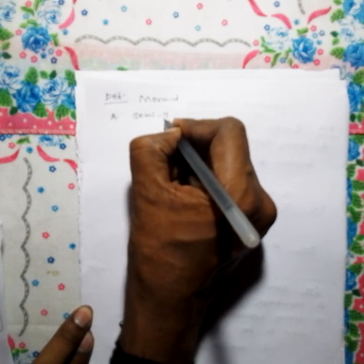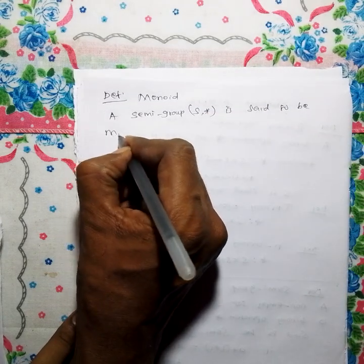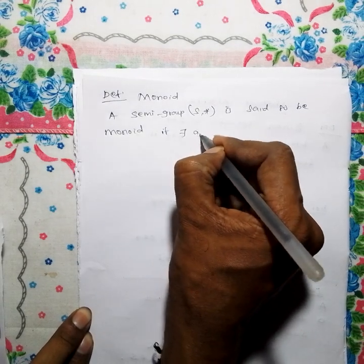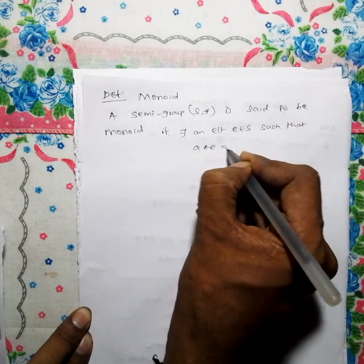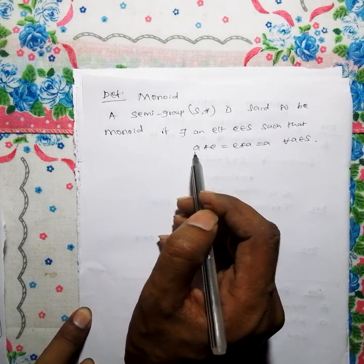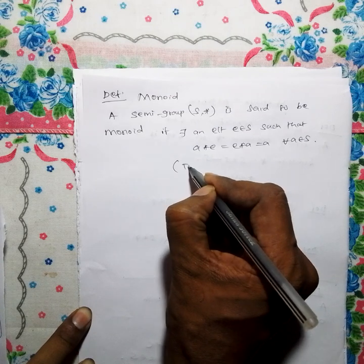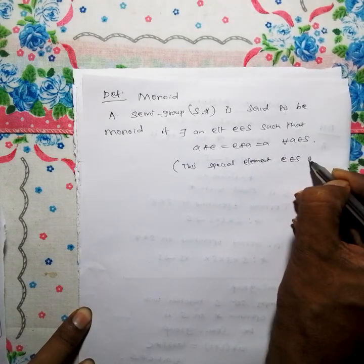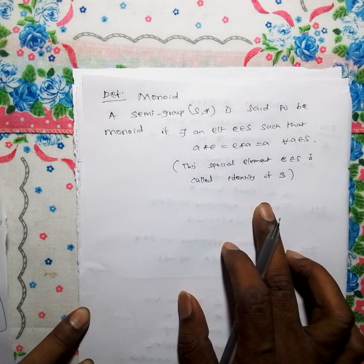A semigroup (S, star) is said to be a monoid if there is an element E belonging to S such that A star E equals E star A equals A, for every A belonging to S. This special element E is called the identity of the set.